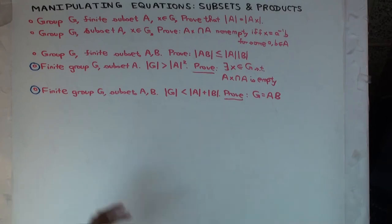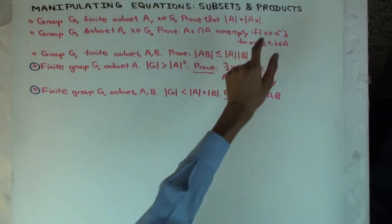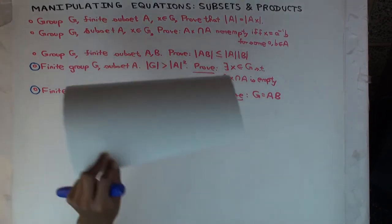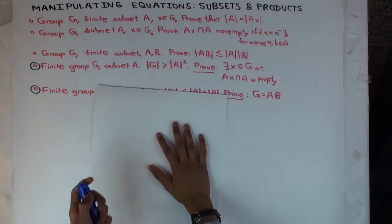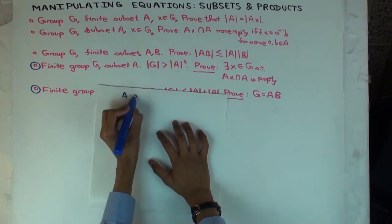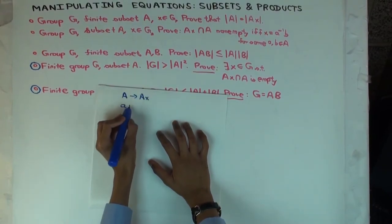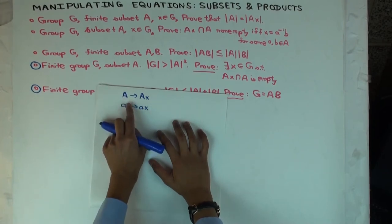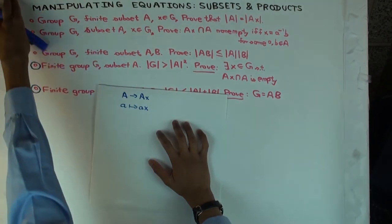So what's a natural choice of bijection between A and AX? It sends little a to little aX. You are trying to define a map from A to AX given by little a maps to little aX. First of all, is this well defined? Yes. Does it send things in A to things in AX? Yes, because that's the definition of AX.